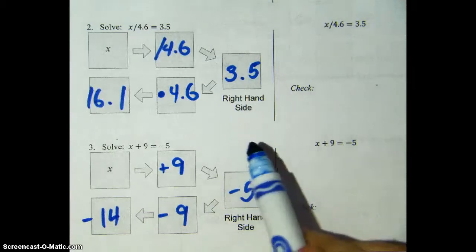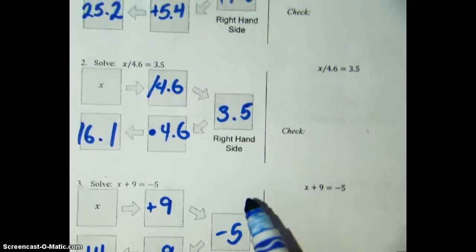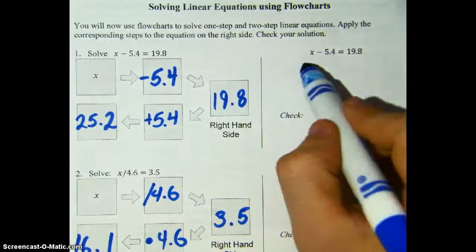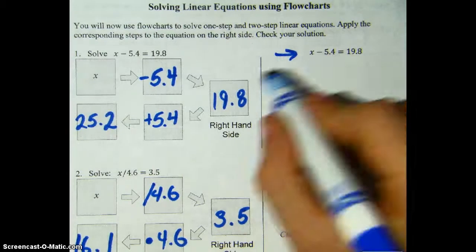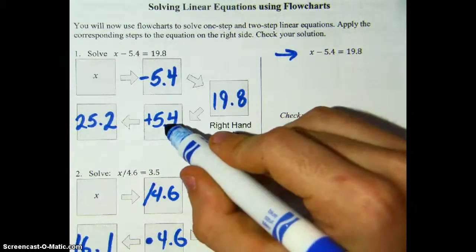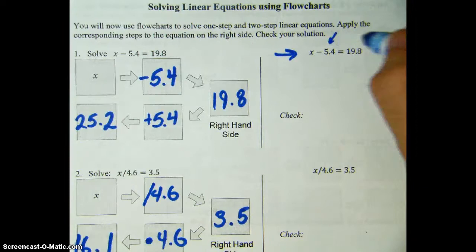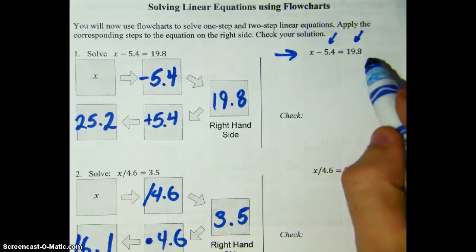Now before we go on, I want to show you how to write these without using the flowchart, by using just algebra. Go back up to the top. Here is our equation written out algebraically. To solve this we're going to use inverse operations just like we did before. But the rule of equations is that whatever you do to one side of the equal sign, you must do to the other. These are called properties of equality — basically it means whatever you do to one side, you've got to do to the other.